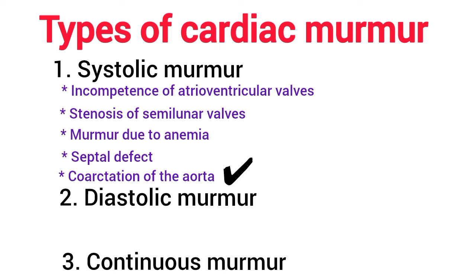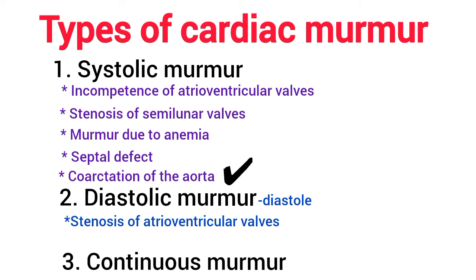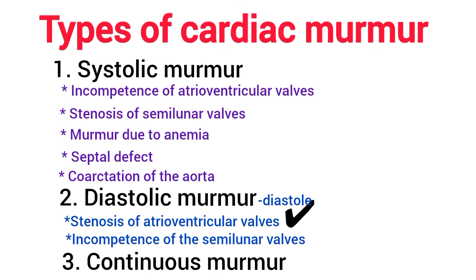Diastolic murmur is the murmur that is produced during diastole. It is produced in the following conditions. Number one is stenosis of atrioventricular valves. When the atrioventricular valves become narrow, turbulence of blood flow occurs during diastole. Murmur due to stenosis of the mitral valve is heard better at the mitral area, and murmur due to stenosis of the tricuspid valve is heard better at the tricuspid area. Number two is incompetence of the semilunar valves. The murmur is produced during regurgitation of blood from the aorta into the ventricles through an incompetent semilunar valve during diastole. It is like a blowing sound with a low frequency.